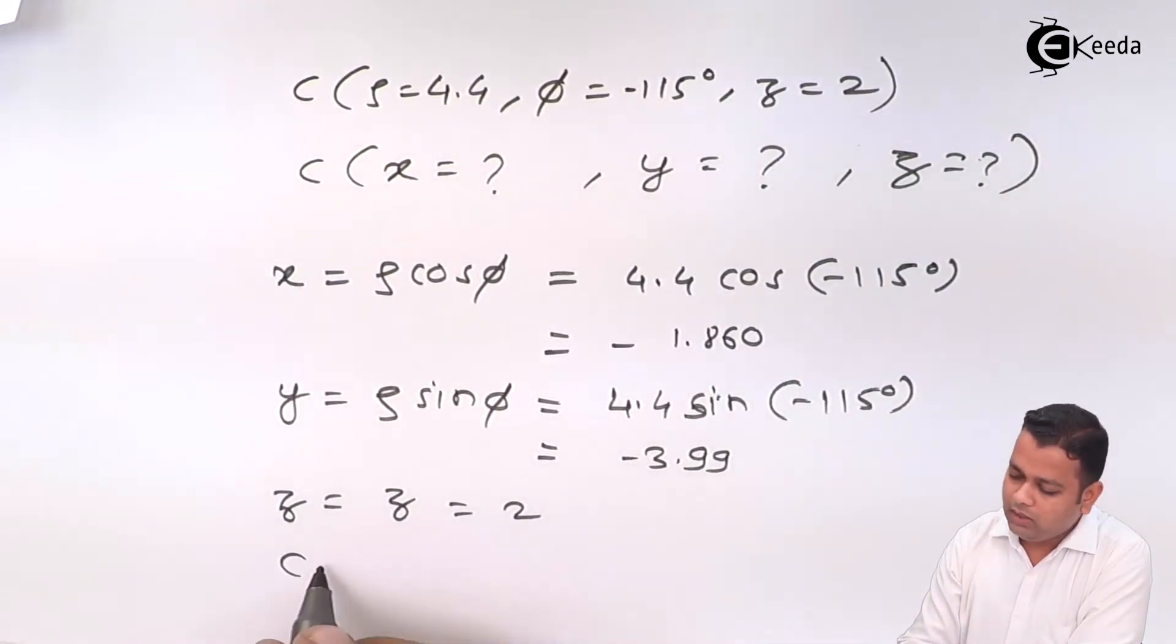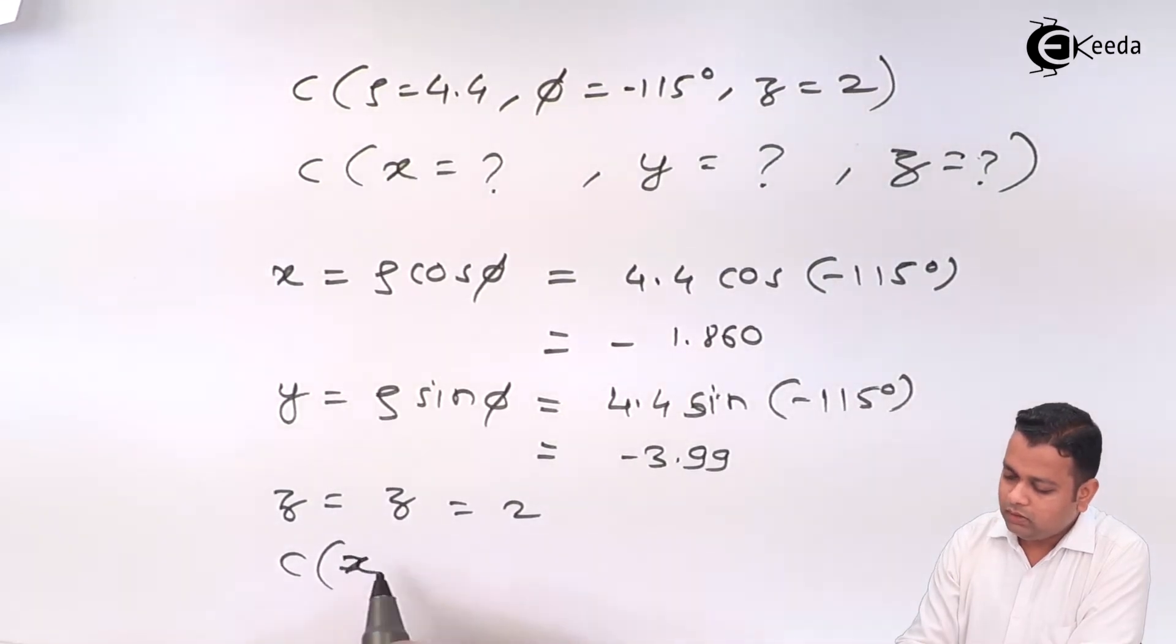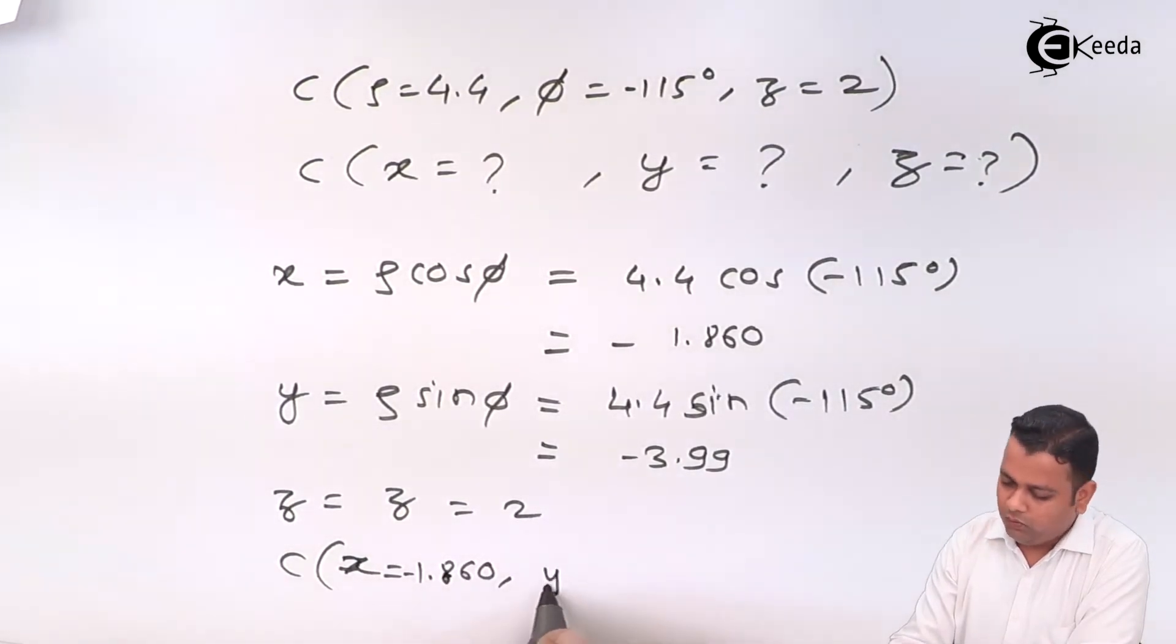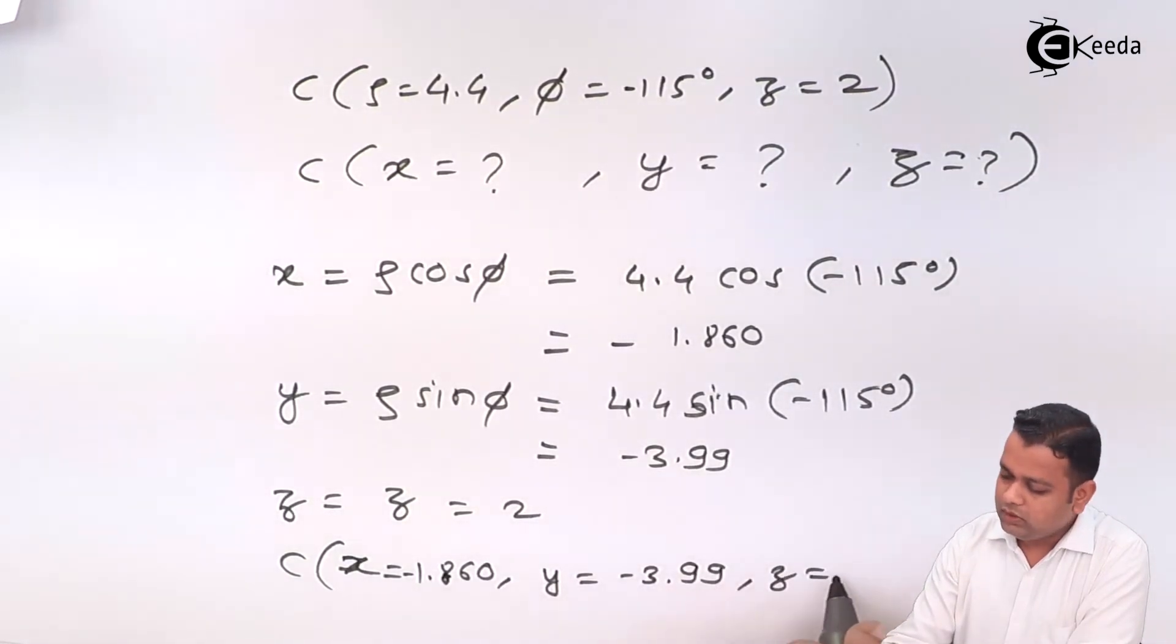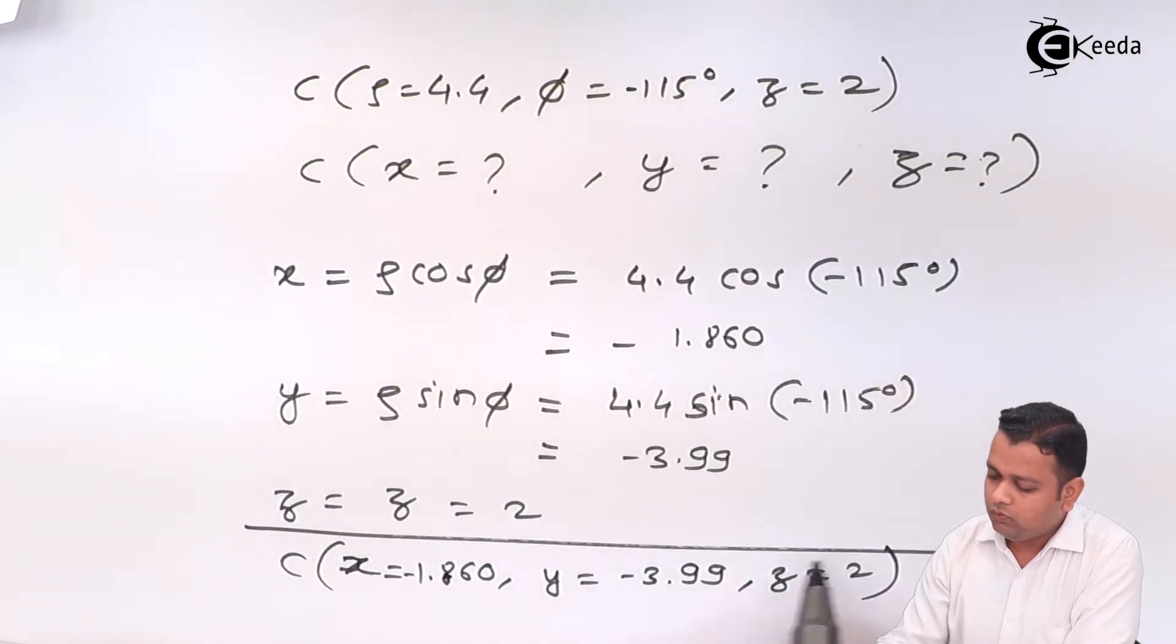So, finally, we get the answer, c in bracket, x is equal to minus 1.860, y is equal to minus 3.99, z is equal to 2 for part A.